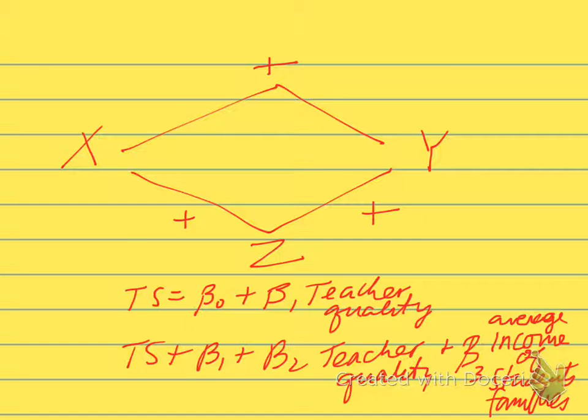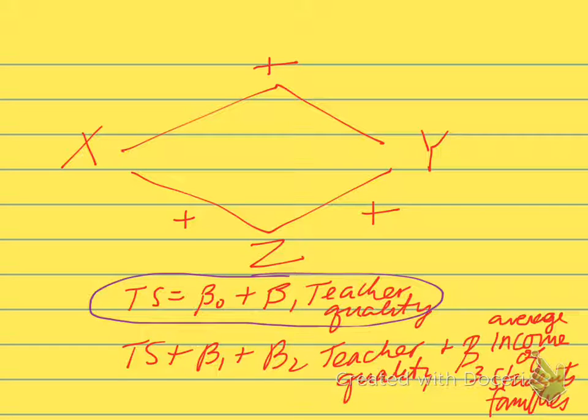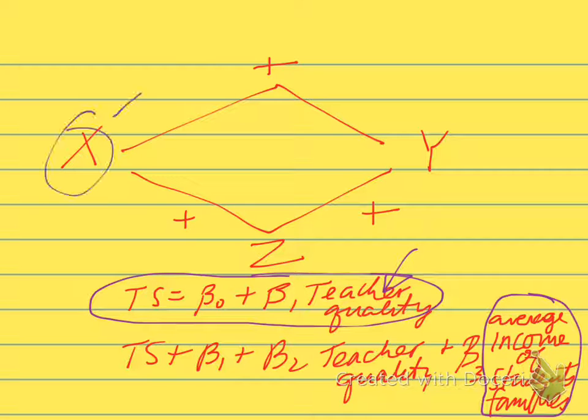Let's look through a little example. Suppose we have test scores as a function of teacher quality, and we have an omitted variable that's the average income of students' families in a school district. We might imagine that teacher quality, our x variable, has a direct effect on the outcome, test scores, and that's a positive effect. Higher teacher quality means higher test scores.